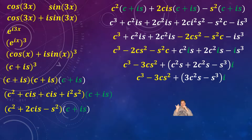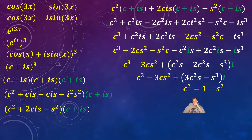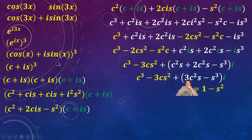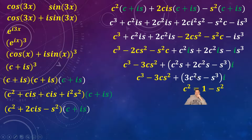Now I'm going to apply the Pythagorean identity. In this context: c squared equals 1 minus s squared (from cosine squared plus sine squared equals one). I'll rewrite the imaginary part's 3c squared·s as 3(1 minus s squared)·s, replacing c squared with 1 minus s squared, so that term will have only sines and no more cosines — that's the motivation.